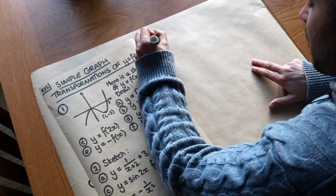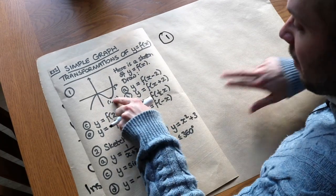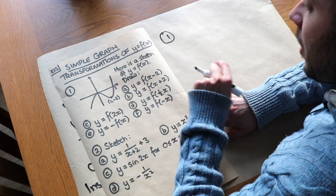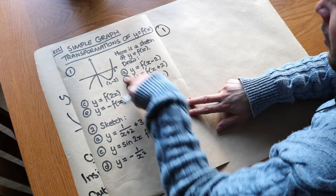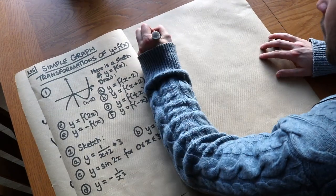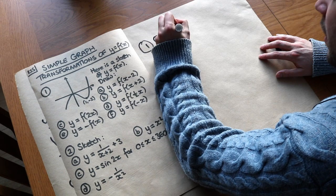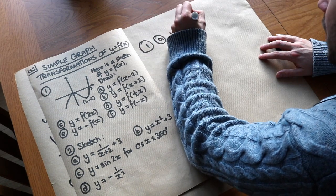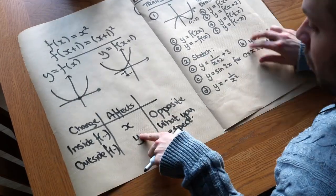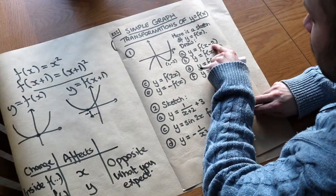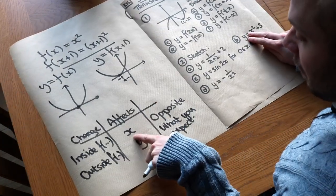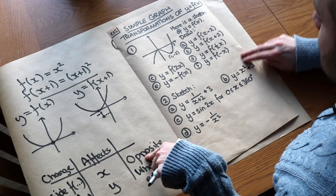Let's apply it to these questions. We have a sketch with a minimum point at (1, −2) and an x-intercept at 3, and we want to sketch different variants of y equals f of x. The first one is y equals f of x minus 2. Referring to our table, that minus 2 is inside the function, so it's going to affect the x values and do the opposite of what we expect.